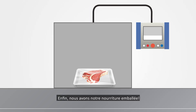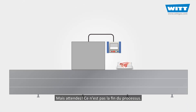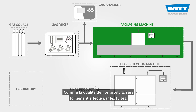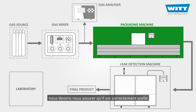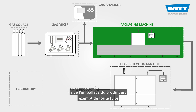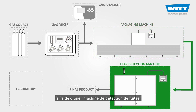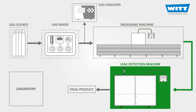Finally, we have our food packed. But it's not the end of the process. As our product quality will be dramatically affected by leakages, we have to be sure it is sealed properly. So the next stage is to make sure the product package is free from any leakages, using a leak detection machine.